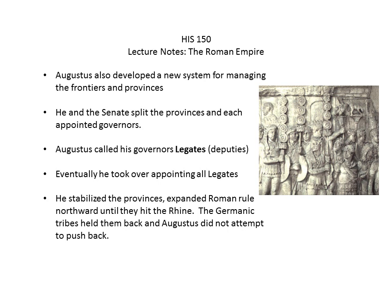Augustus was also very good at bureaucratic organization. He developed a new system for managing the frontiers and provinces — he and the Senate split the provinces and each appointed governors. Augustus called his governors legates or deputies, and eventually he took over appointing all legates. He stabilized the provinces and expanded Roman rule northward until hitting the Rhine, where the Germanic tribes held them back. He showed intelligent leadership by not pushing back when it would cost too many men and too much money.